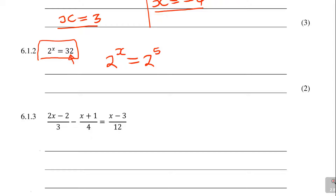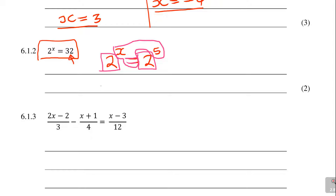Once you match the bases — you see 2 and 2 are the same — then the exponents must also be equal. So 2 equals 2 means x is equal to 5. Then you get your 2 marks.